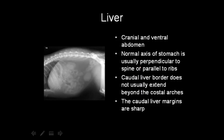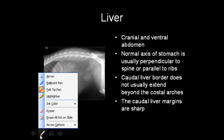Starting with the liver: the liver is cranioventrally positioned and normally is within the ribcage, and that is an important factor. Another important factor is that the caudal edge of the liver is quite pointy, quite sharp.